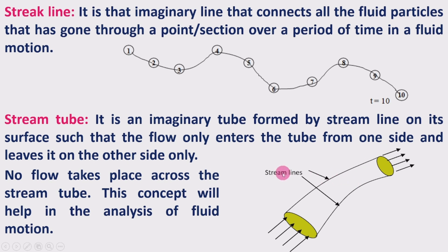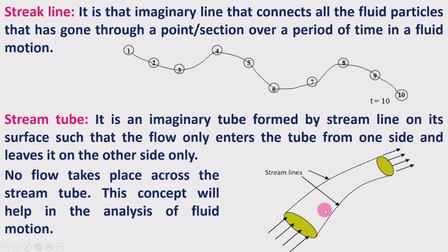We imagine the streamlines on the outside surface and also around the circumference and inside — all these streamlines are imaginary and connected. The purpose of the stream tube concept is that no flow takes place across the stream tube; flow takes place only along it. There is no fluid flow at right angles to the streamlines. This concept helps in the analysis of fluid motion, along with all the other lines we have discussed.